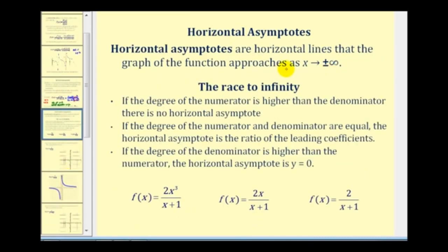Horizontal asymptotes are horizontal lines that the graph approaches as x approaches either positive infinity or negative infinity. For horizontal asymptotes, we're going to see how the function behaves as x increases or decreases without bound. One way to determine horizontal asymptotes is to think of the numerator and denominator racing to infinity — whichever wins helps us determine the equation of the horizontal asymptote.